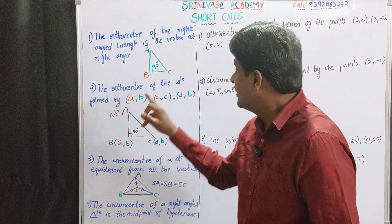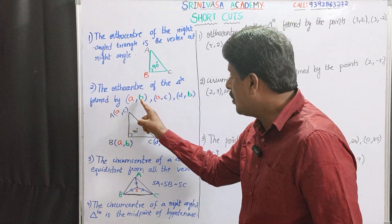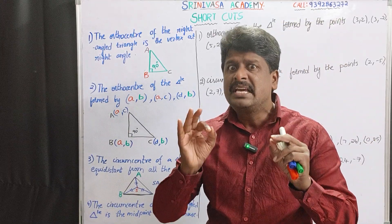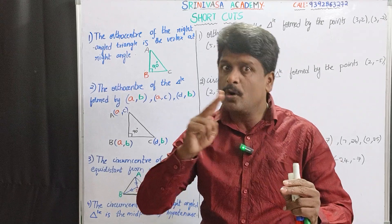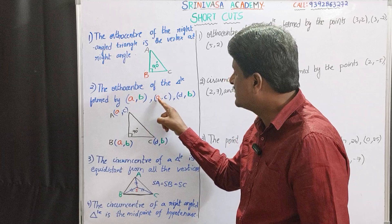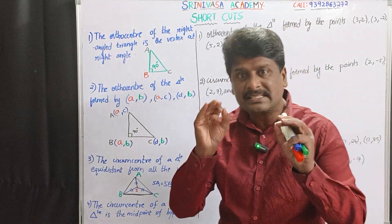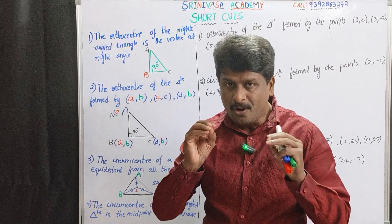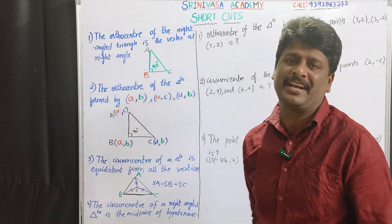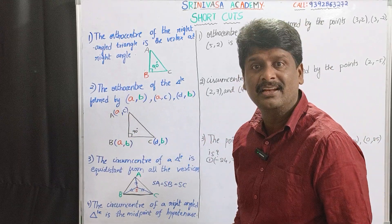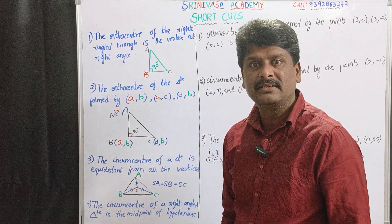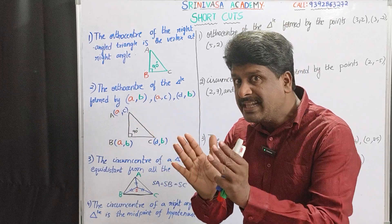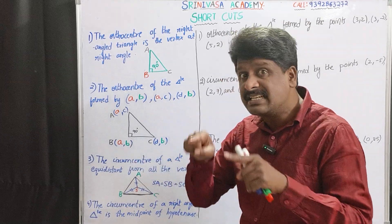Second point: the ortho center of the triangle formed by vertices (A,A), (B,C), (D,B) — observe that. Whenever given three vertices of a triangle follow the condition where two vertices have the same x-coordinates and two vertices have the same y-coordinates, such a triangle is definitely a right-angled triangle. Take the equal x-coordinate and the equal y-coordinate — together they form a vertex, and that vertex itself is the ortho center.